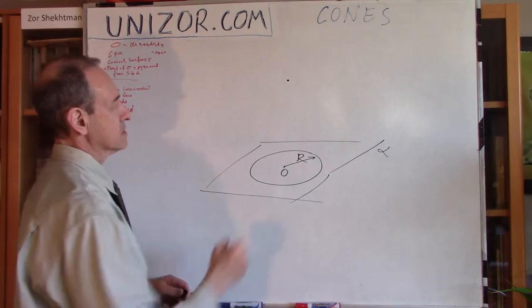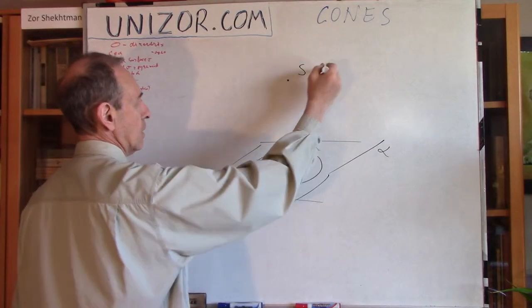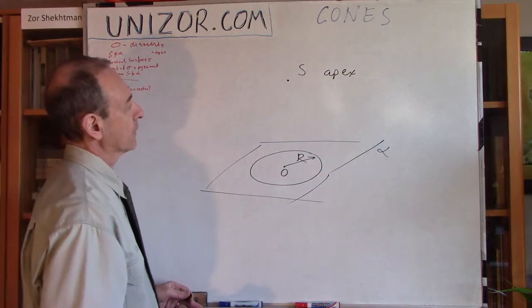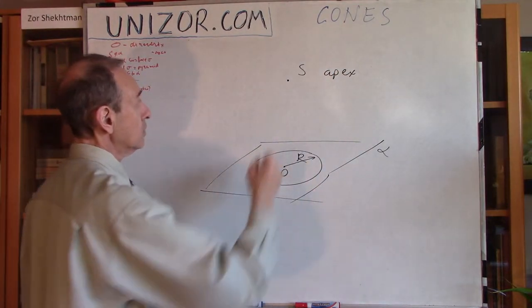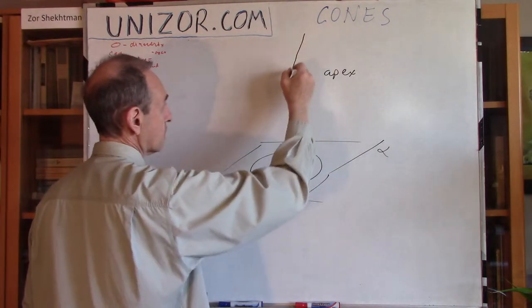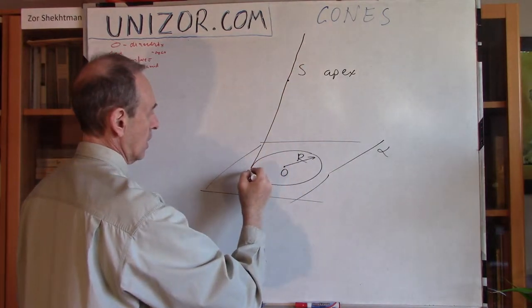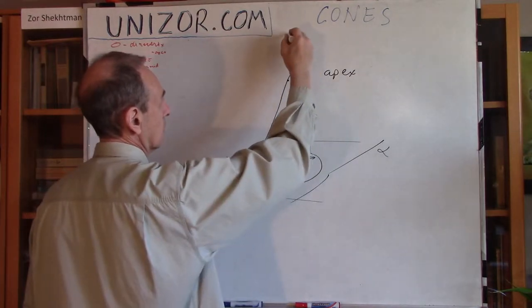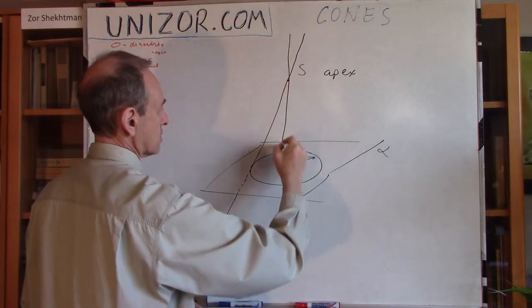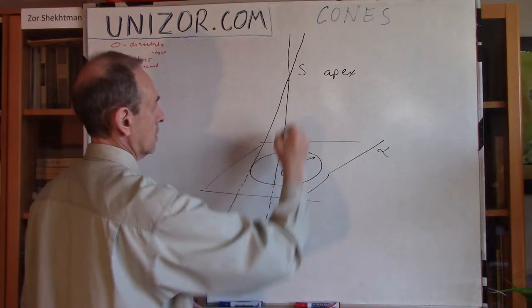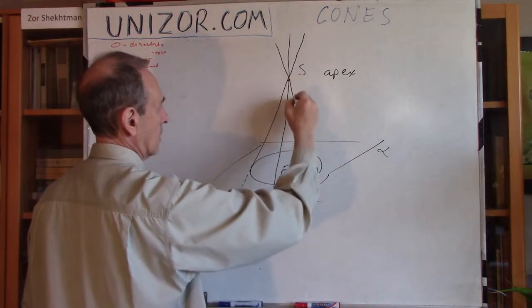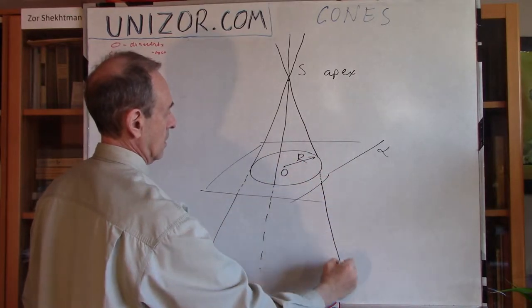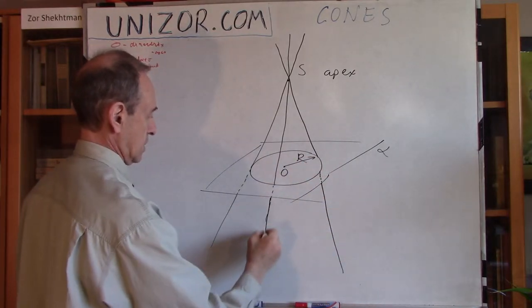So, outside of the plane there is a point S, which is an apex of the conical surface. And we actually draw a conical surface using our circle as a directrice.